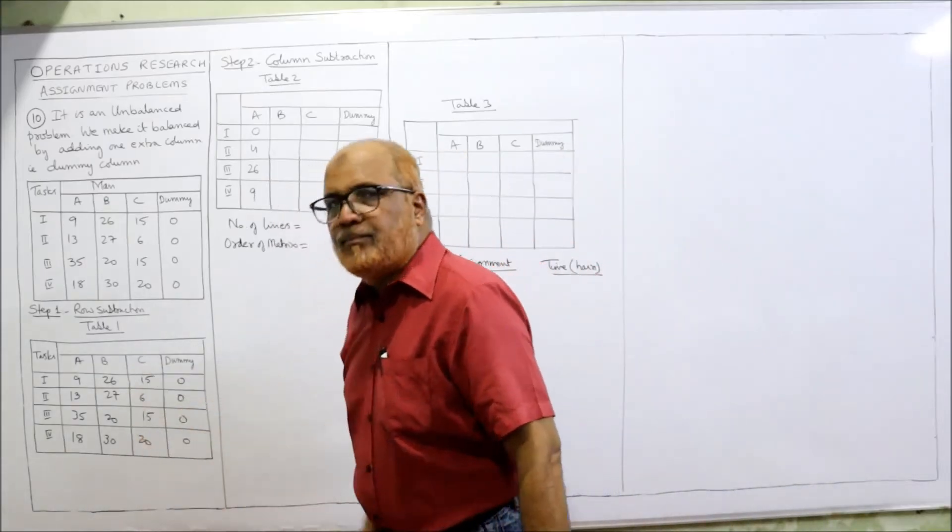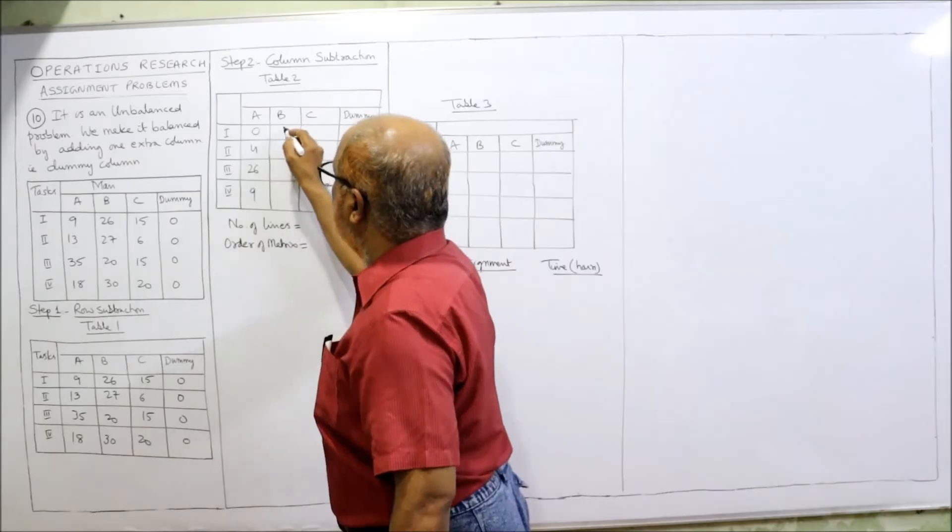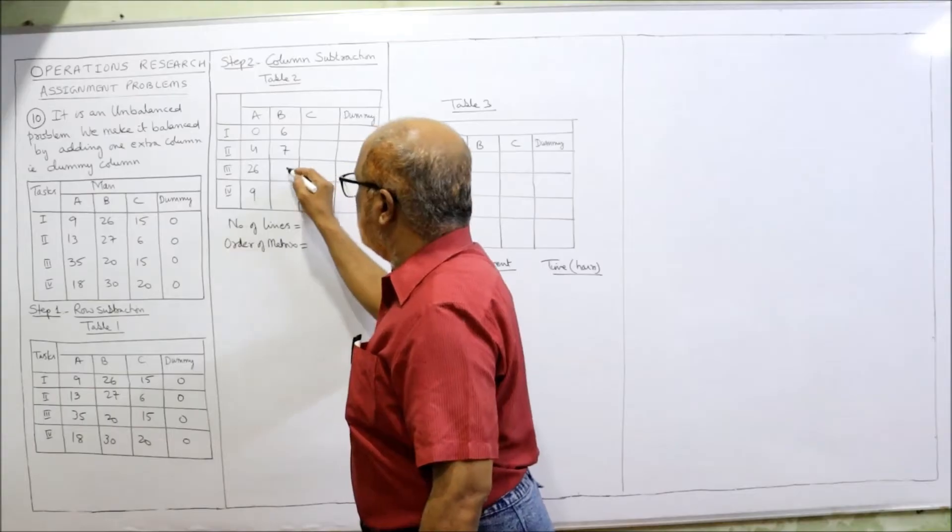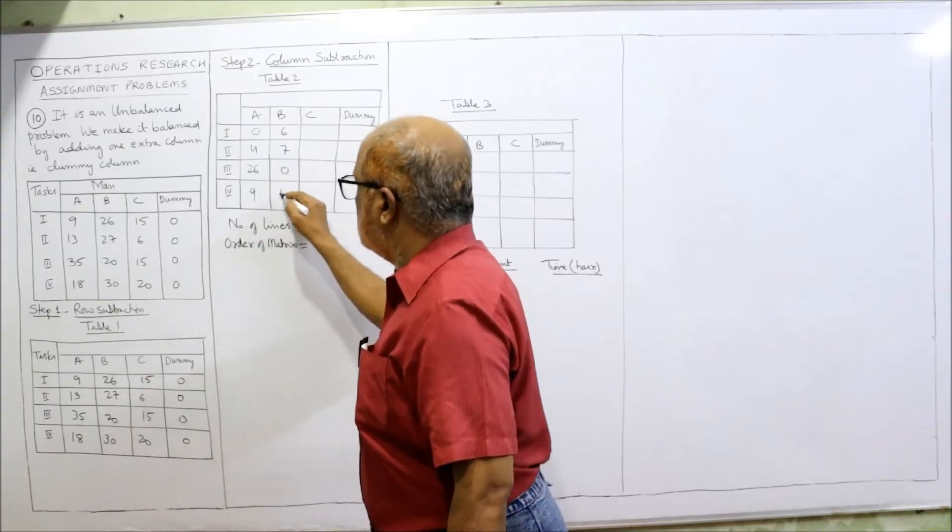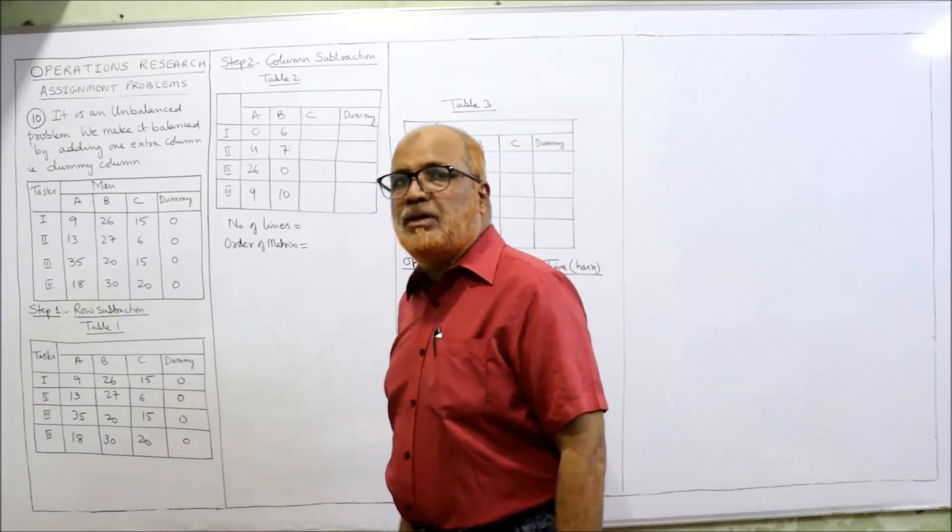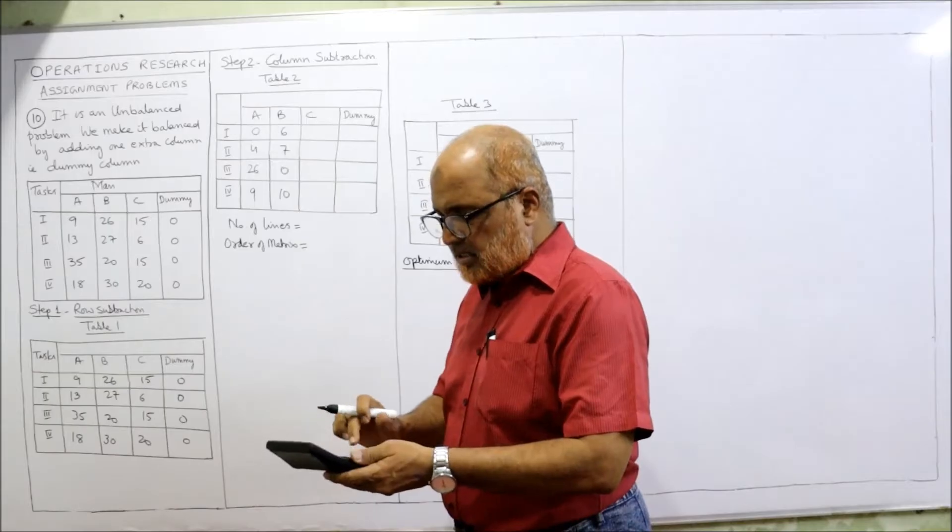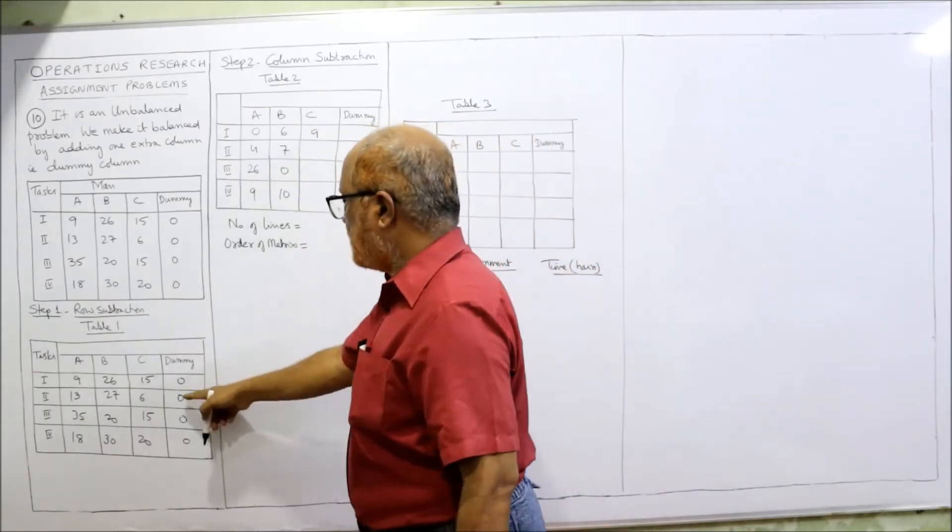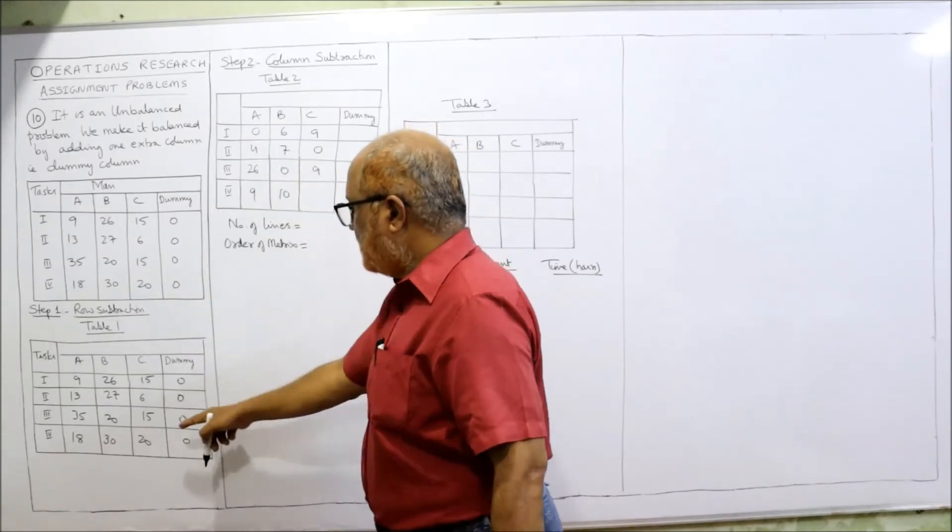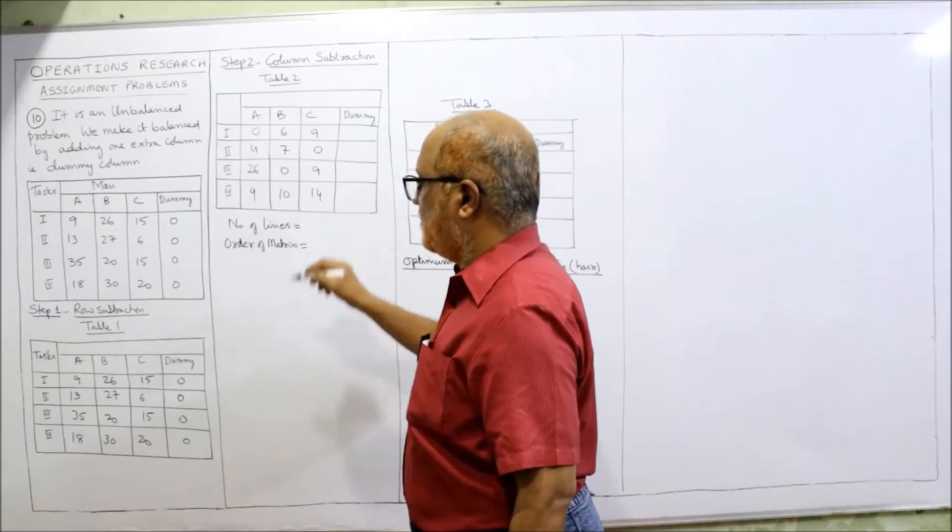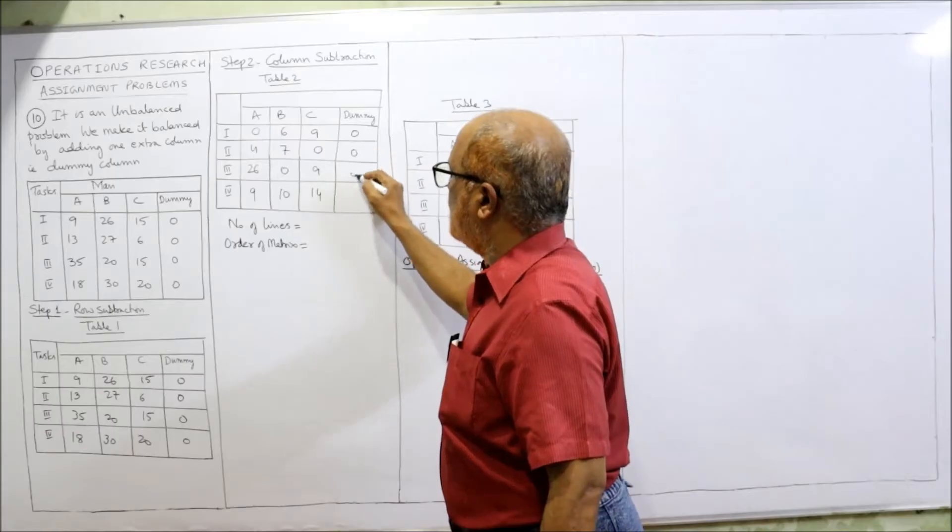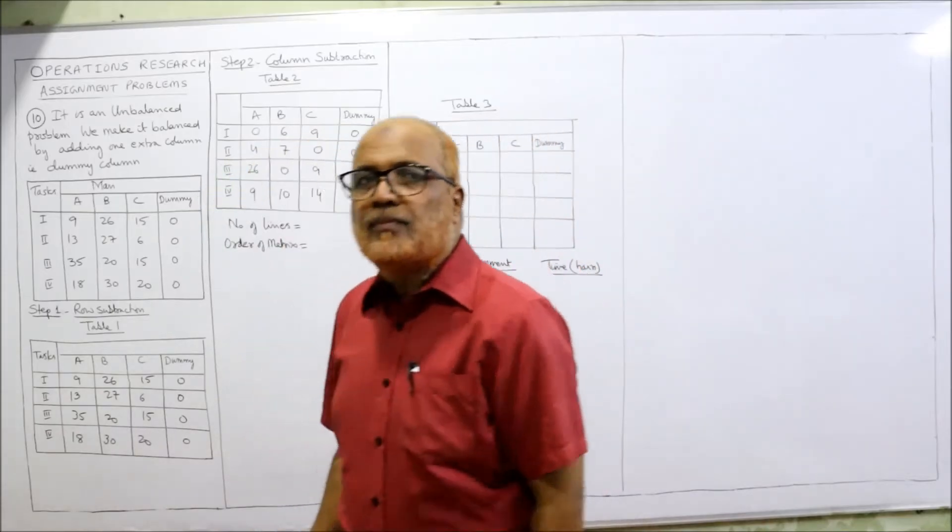0, 30 minus 20 = 10. Third column, 6 is minimum, so 15 minus 6 = 9, next one is 6 minus 6 = 0, 15 minus 6 = 9, then 20 minus 6 = 14. Last column is 0 only, so 0 minus 0 will be 0s, all 0s. That's all.